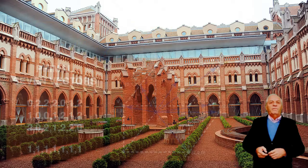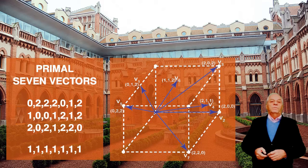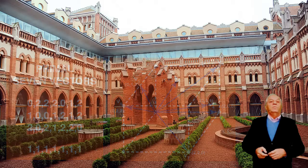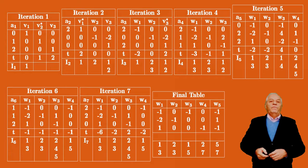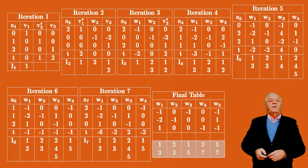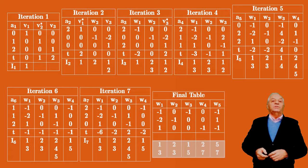First, we create the following data file, which is obtained from the graphical figure of the cone generators. Introducing this data to the computer program, we get the following tables, which show its dual cone. From the final table in its lower part, we identify the facets of the cone, which are defined by the pairs of vectors a1, a3; a2, a3; a1, a5; a2, a7; and a5, a7.